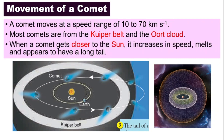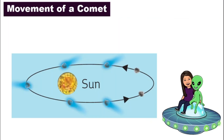When a comet gets closer to the sun — remember, the comet has its own orbit and orbits around the sun — they will increase in speed and then melt because the sun is hot. So they will start to melt and it appears as if they have a very long tail.